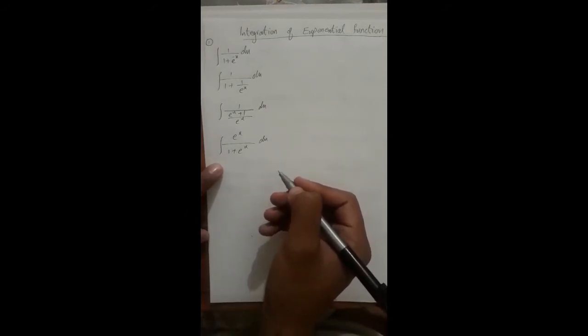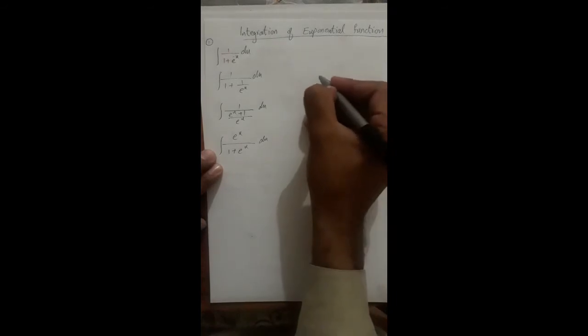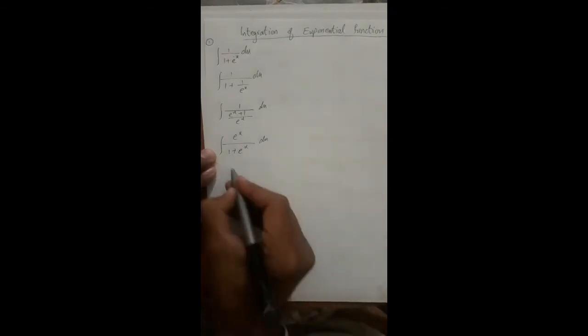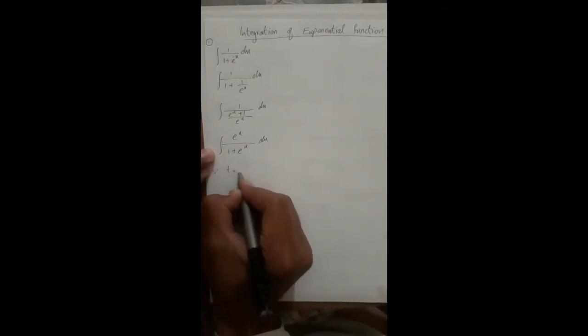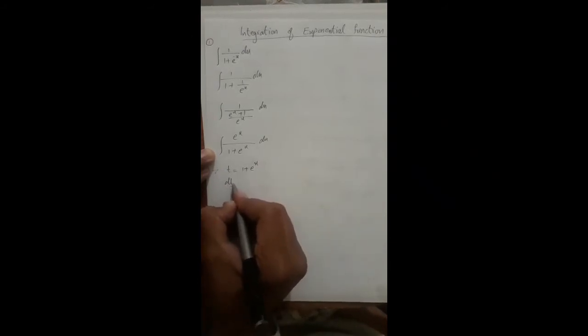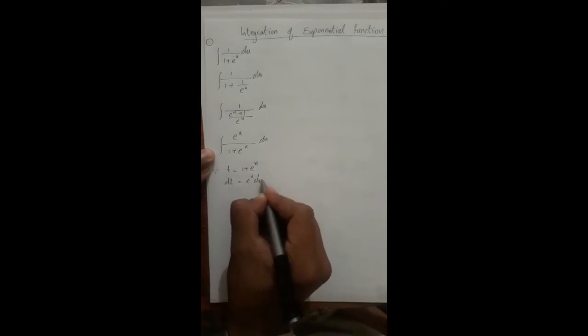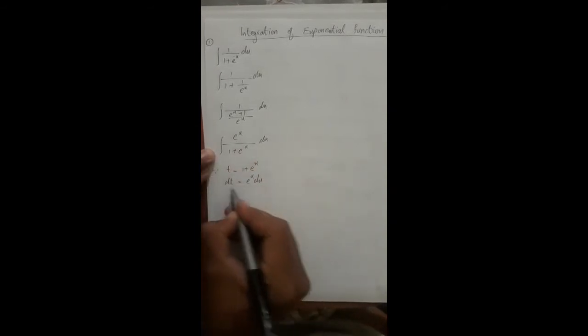This integration can be done by substitution. We put t is equal to 1 plus e^x. Then dt/dx is equal to e^x, so dt equals e^x dx.